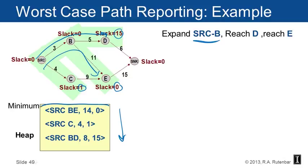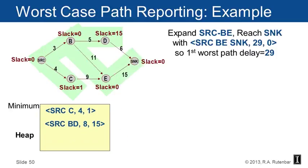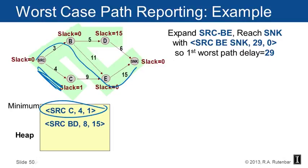We pop source→B→E and expand it — its neighbor is the sink. We get source→B→E→sink. The sink is the target, just like in maze routing. We print out path source, B, E, sink with delay 29, then discard it. The next smallest-slack path in the heap is source→C (slack 1), so we pop and expand that next.